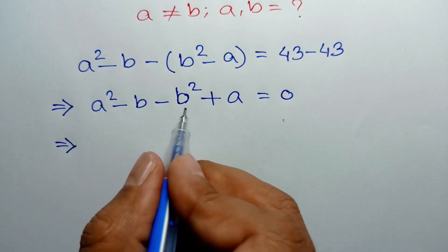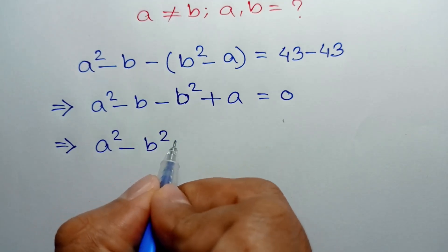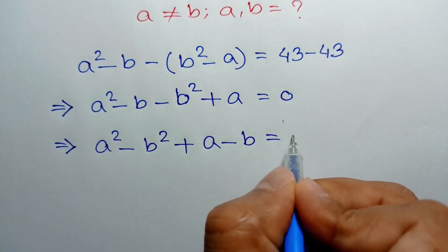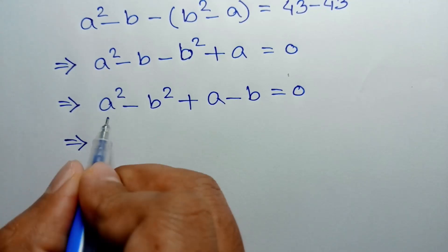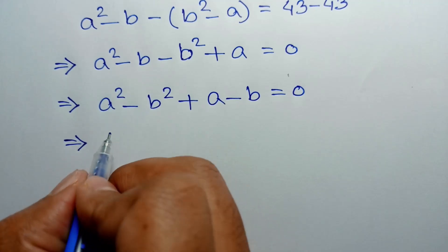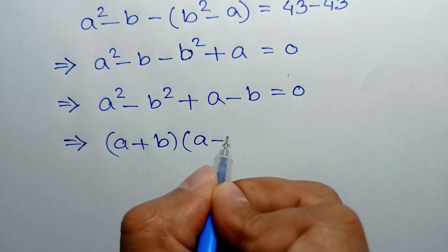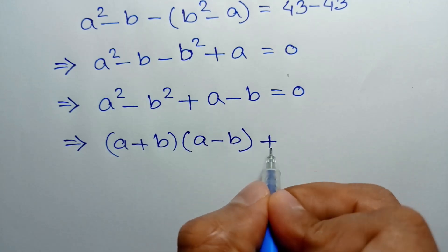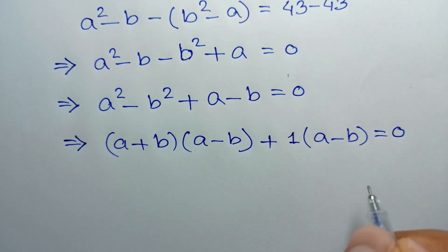Rearranging the left side, we can write A squared minus B squared plus A minus B equals 0. Applying the formula A squared minus B squared equals A plus B times A minus B, we get A plus B times A minus B, plus 1 times A minus B, equals 0.